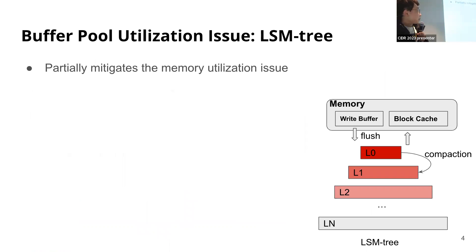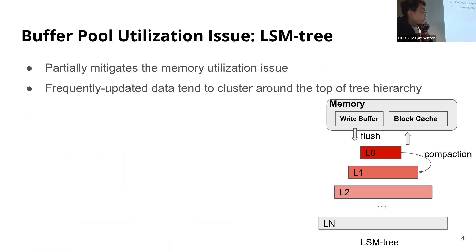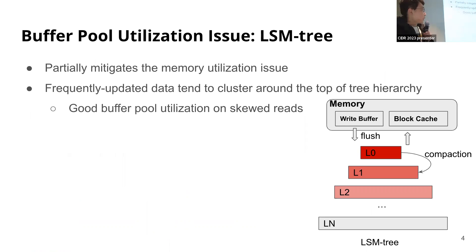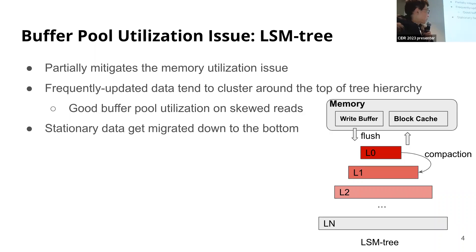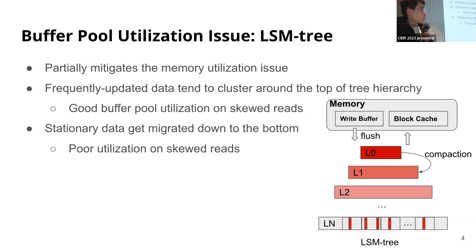The LSM tree, on the other hand, partially mitigates this main memory utilization issue in that data blocks near the top of the tree hierarchy tend to contain records that are frequently updated. Since the search goes through the levels top to bottom, skewed reads on these frequently updated data tend to have good buffer pool utilization. However, for stationary data that don't get updated very often, they tend to get migrated down near the bottom of the LSM tree hierarchy. So if there are skew reads on these stationary data, you still get poor main memory utilization, much like the B-tree case. LSM tree only partially mitigates this issue.